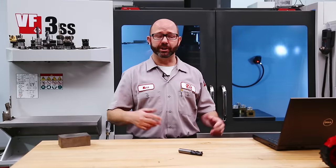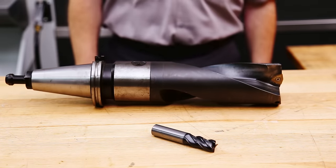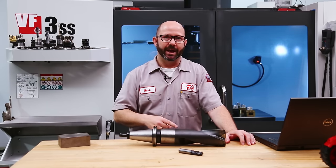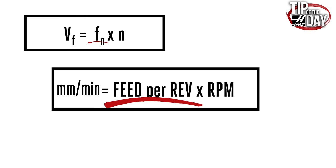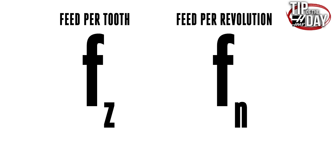If you are dealing with drills and not end mills, our feed rate might be listed in our catalogs as a feed per revolution, not a feed per tooth. We just multiply the millimeters per revolution chip load from the book times our RPM to get our feed rate in millimeters per minute. Know the difference between millimeters per tooth (FZ), which we typically use for milling tools, and millimeters per revolution (FN), which we often use for drills.